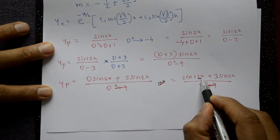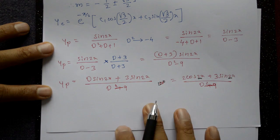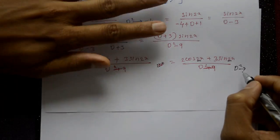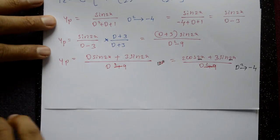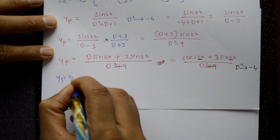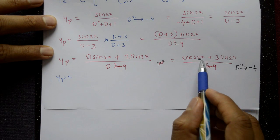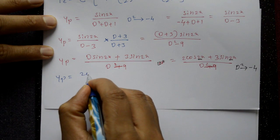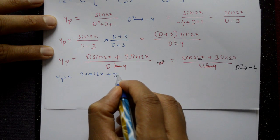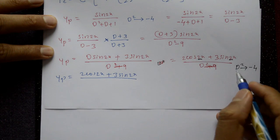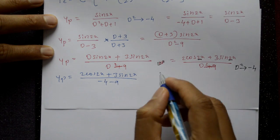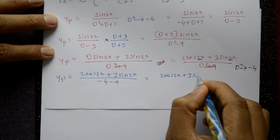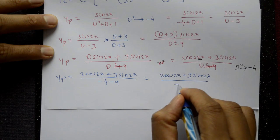Since cos2x and sin2x have the same a = 2, we apply D² = −4 throughout. So yp = (2cos2x + 3sin2x) / (−4 − 9) = (2cos2x + 3sin2x) / (−13).